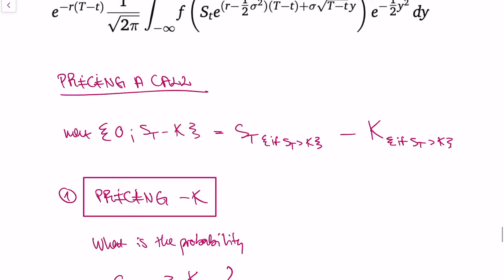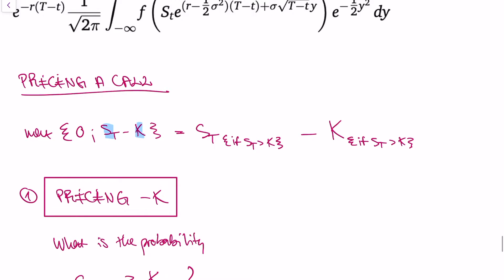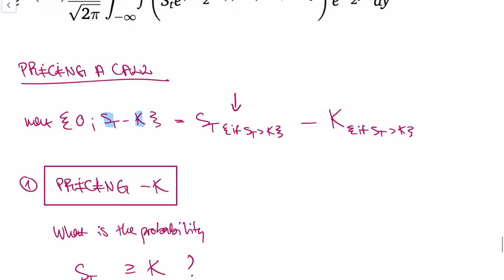A call option gives you the option to buy an asset at some time in the future, and you pay a specified price for this asset, which we call k, specified in advance. If the underlying is greater than the strike price k, then you get the underlying but need to pay k. If the underlying is smaller than k, you do not use your option because you would lose money — so you get nothing. This is the formula for the payoff of a call.